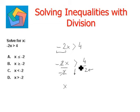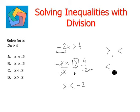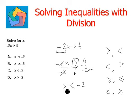It just becomes — here it was greater than, now it will become less than. 4 divided by negative 2 is negative 2. Whenever an inequality is divided by a negative number, the inequality sign flips and becomes the other way round. If it is greater than, it becomes less than. If it is less than, it becomes greater than. Greater than or equal to becomes less than or equal to, and less than or equal to becomes greater than or equal to. So we have to remember this. We get x is less than negative 2, which is present in option C.